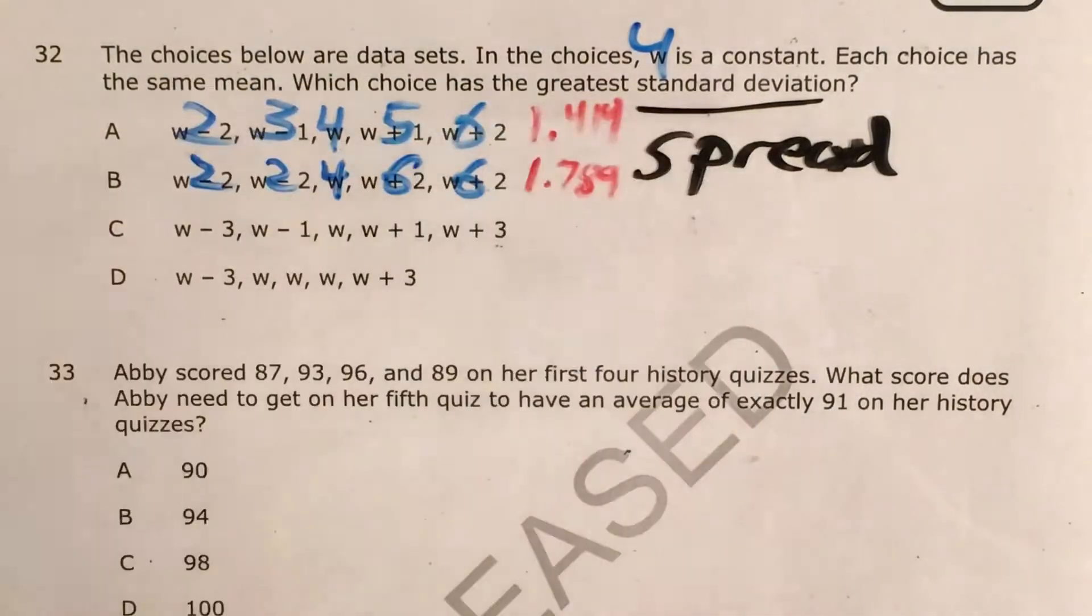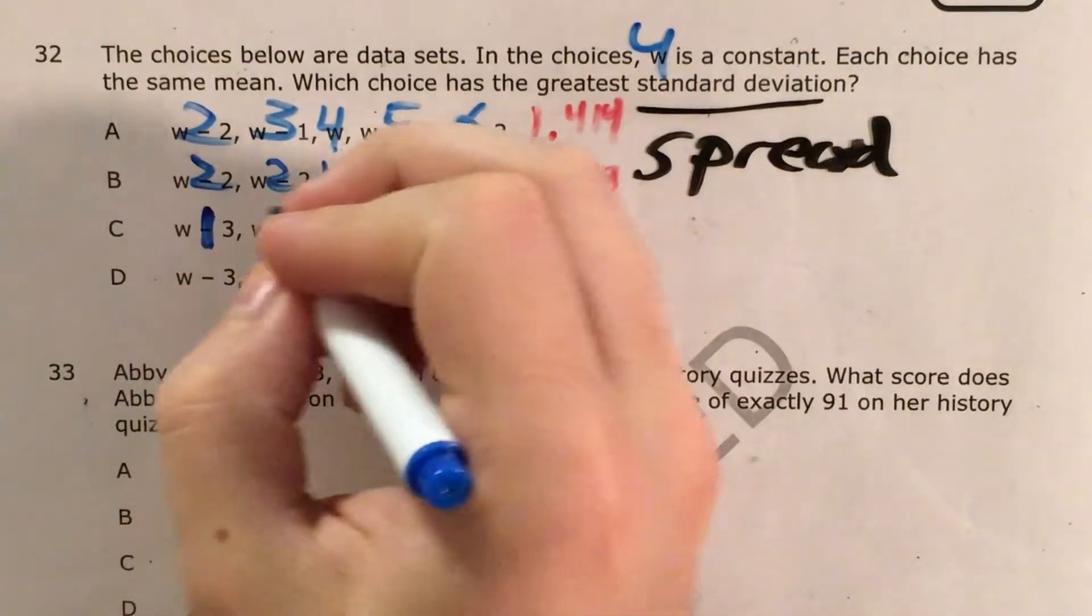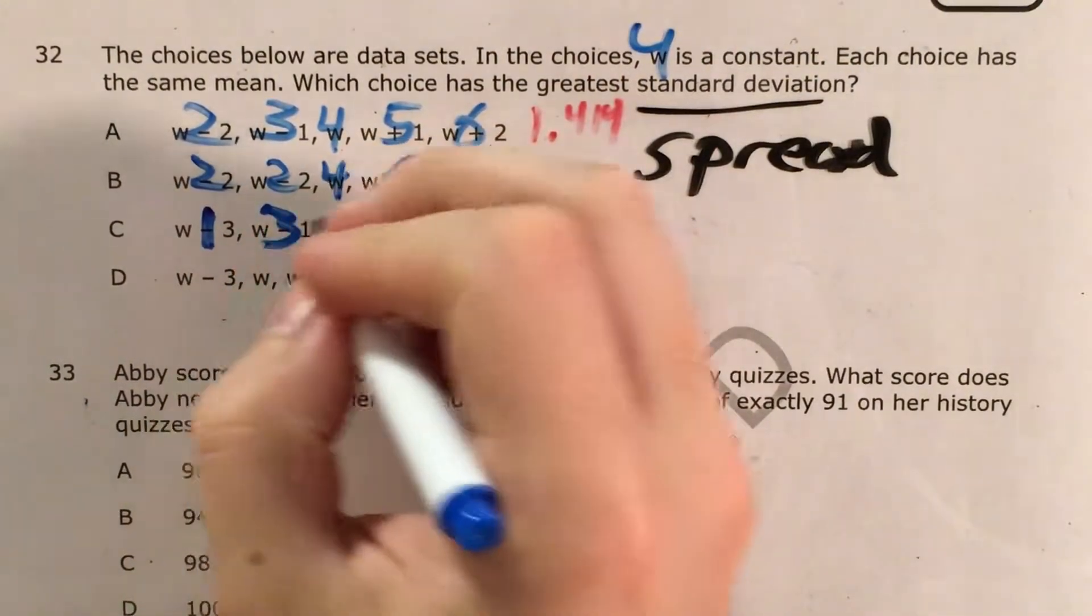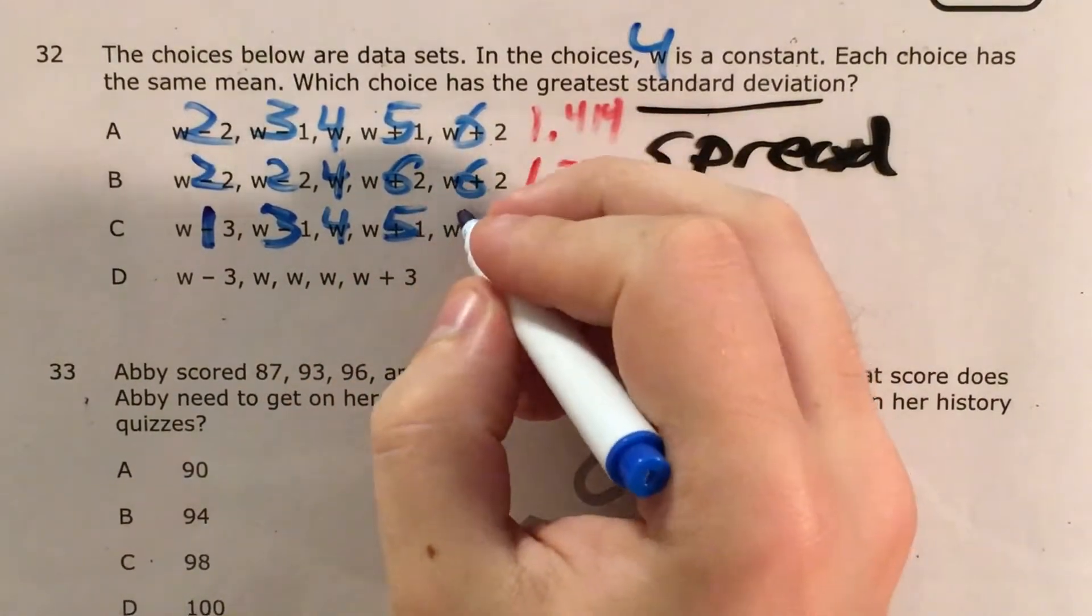Now let's try C, where, don't need my calculator yet, where if I do 4 minus 3, that's 1. 4 minus 1 is 3, 4, 4 plus 1 is 5, and 4 plus 3 is 7.